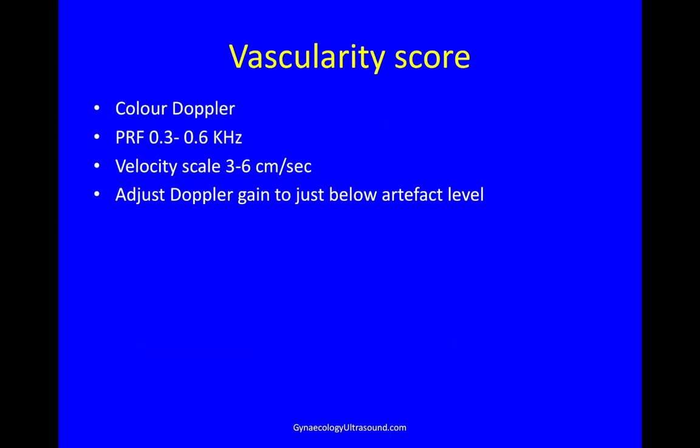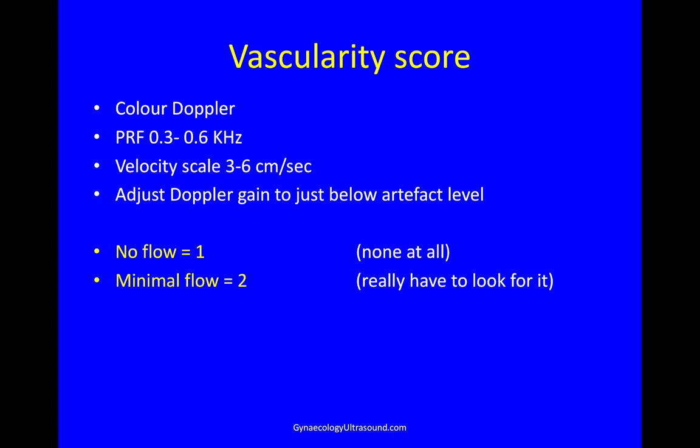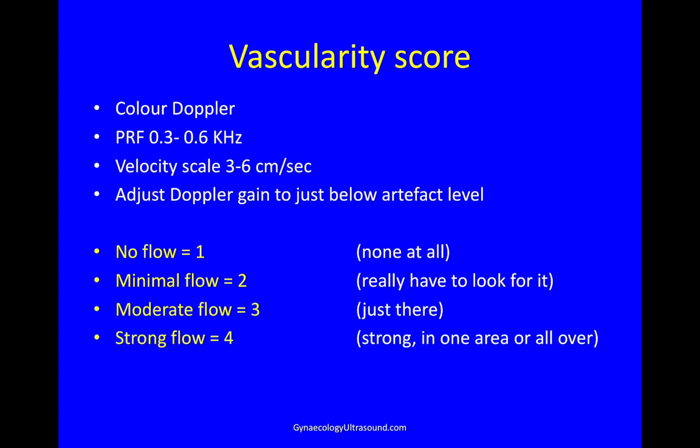The vascularity score is very useful — it's subjective but it works. Use colour Doppler on a PRF of 0.3 to 0.6 kilohertz, equivalent to a velocity scale of three to six centimetres per second on some machines. Adjust the Doppler gain to just below the artifact level. If you can't find any flow at all even at 0.3, that's a score of one. If you really have to look for the colour it's a two. If you turn the colour on and it's just there, that's a three. If you find strong flow in one area or throughout the mass, it's a four.